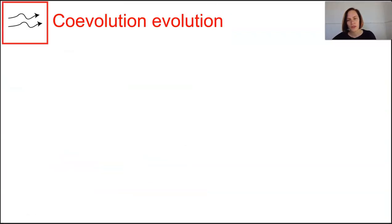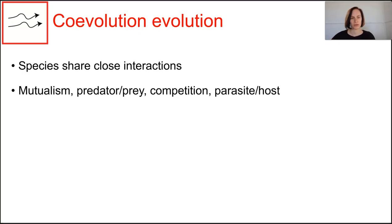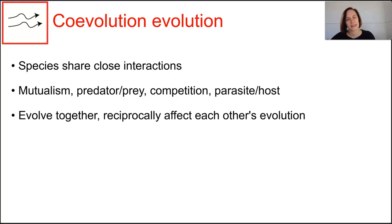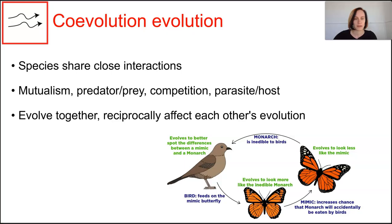Co-evolution occurs between species that share a close interaction — their lives are intertwined through relationships such as mutualism, predator-prey, competition, or parasite-host relationships. As one species evolves an advantageous trait, the other has to keep up. For example, in a predator-prey relationship, slow prey are eaten, so only faster genes are passed on to the next generation. The predator then must also become faster to keep up, so both species evolve together.